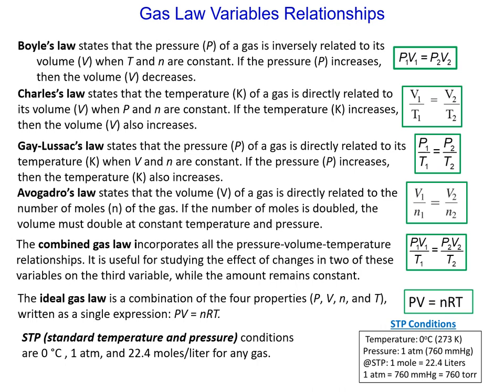STP, standard temperature and pressure, is not a formula. It is a set of conditions, and those conditions are 0°C, which means 273 K, 1 atm, and 22.4 liters per mole for every liter. In other words, at STP, there are 22.4 moles in one liter for any gas.